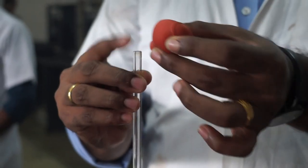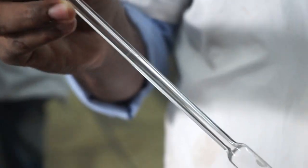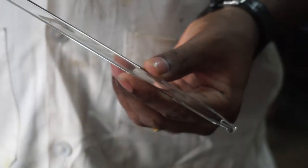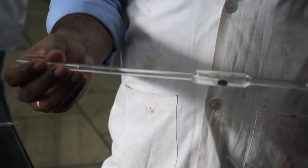For the washing part, you can take this much amount of water. Now tilt it a bit and rotate it in this way. Make sure the water is touching above the calibration mark.